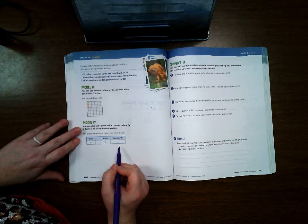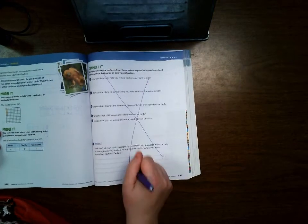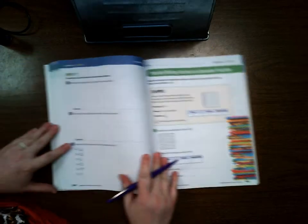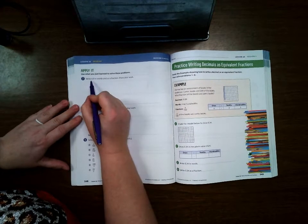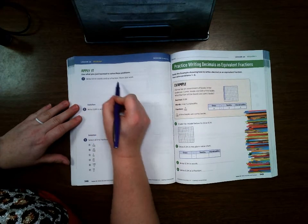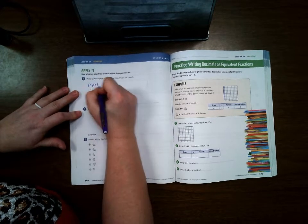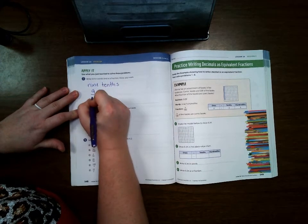We're gonna skip 547 and go on to 548. Write nine tenths in words and as a fraction. So you write it just like you say it: nine tenths, and you write it just like you say it: 9/10.